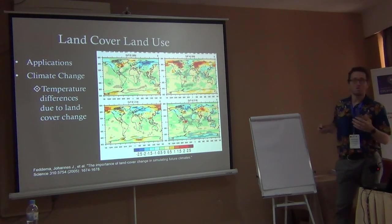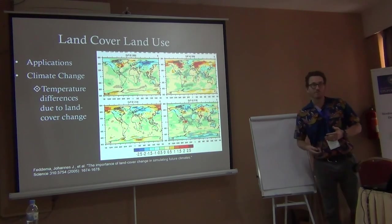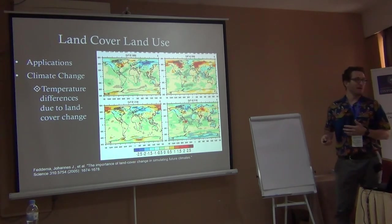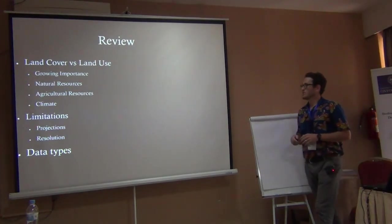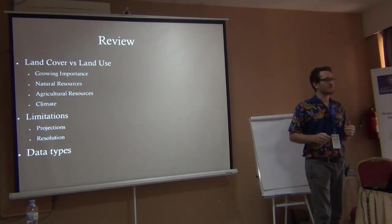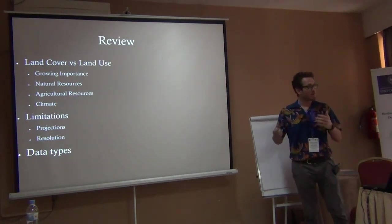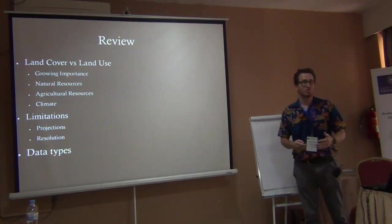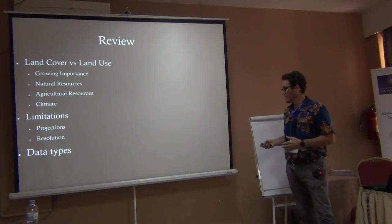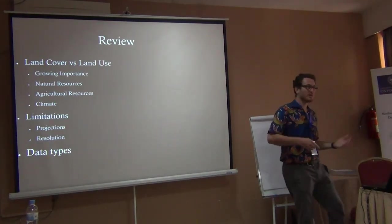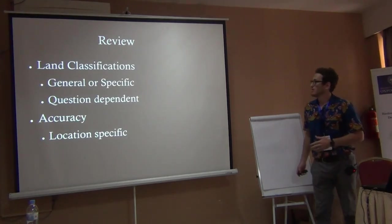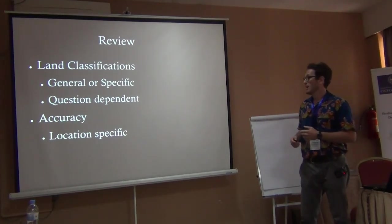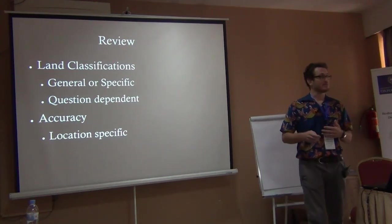For climate change: temperature differences due only to land cover change — when you clear forest or urbanize a landscape, the temperature changes, so we can use land cover to predict climate change. Land cover and land use is very important for natural resources, agricultural resources, and climate. But there are limitations: we need to understand projections, resolutions, accuracies, and the different data types. Classifications can be very general or very specific depending on the question, and accuracy varies by location.